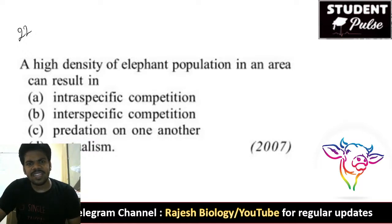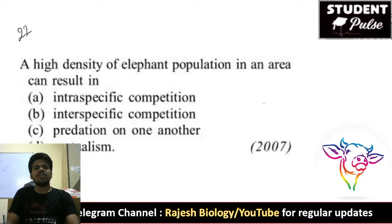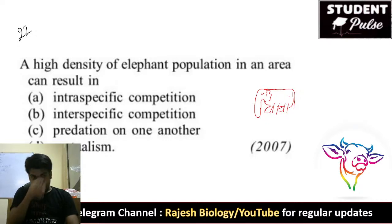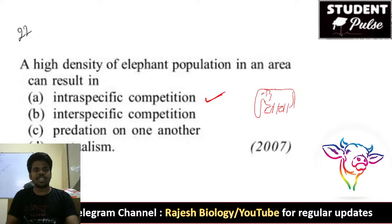Twenty-second question: a high density of elephant population in an area — high density means more elephants in one area. This causes what? More elephants means there is automatically competition within the elephants themselves — that is called intraspecific competition, which is competition within the same species.